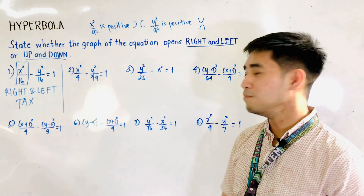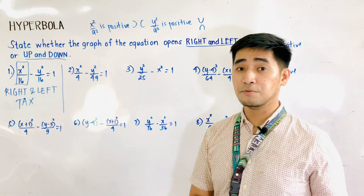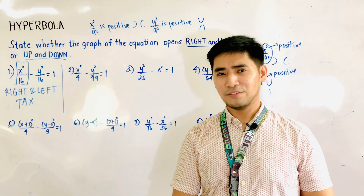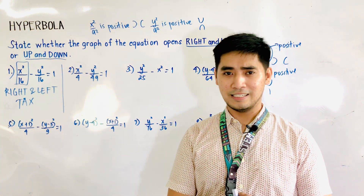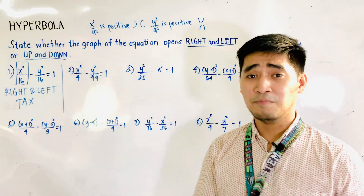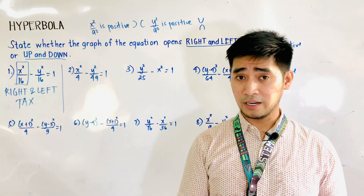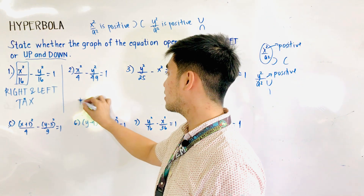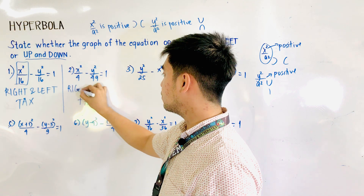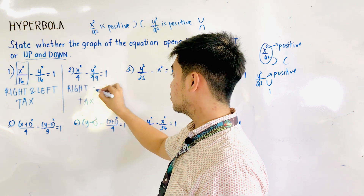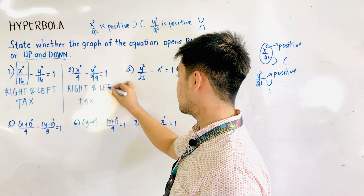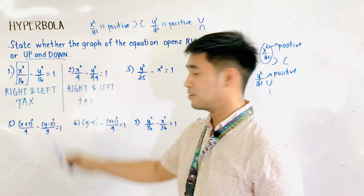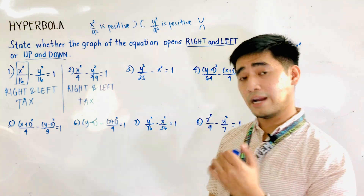For another example, we have x squared over 4 minus y squared over 49 is equal to 1. Just like the first example, let us first analyze the variable that is positive, and that is x squared over 4. Since we have x, this is transverse axis x. For transverse axis x, therefore the nature is also right and left. The graph opens to the right and to the left.